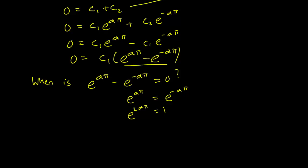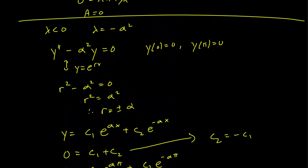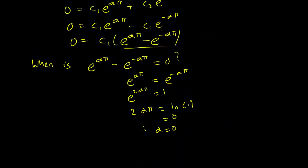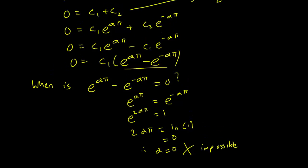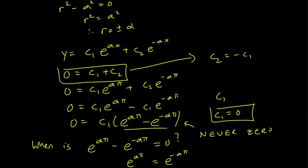And this happens only when alpha equals zero. But this is impossible because if alpha equals zero, then lambda is not going to be negative. So this is impossible. So we know that this expression is never zero, which implies that c₁ must equal zero. So c₁ equals zero and zero equals c₁ plus c₂, so c₂ equals zero.